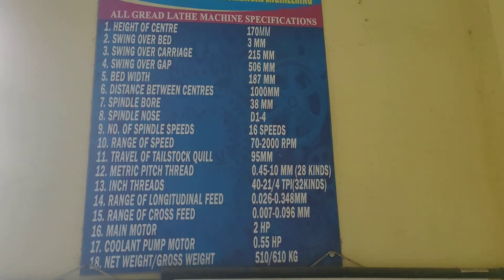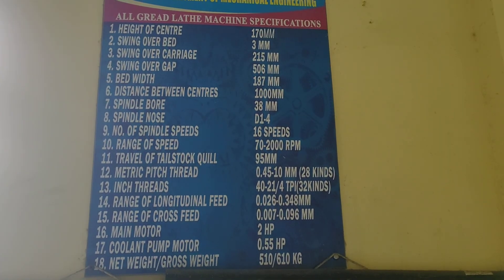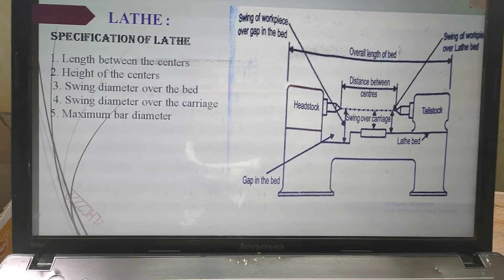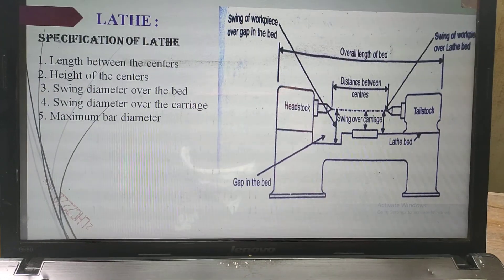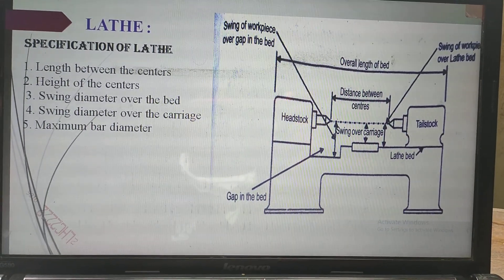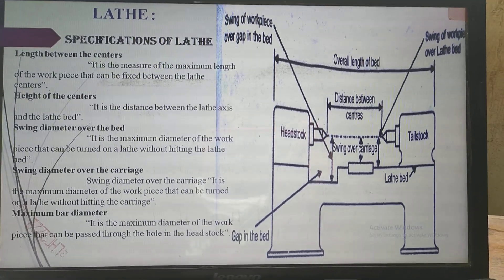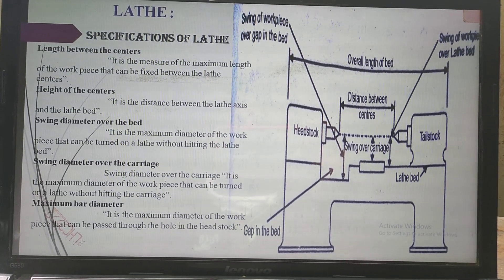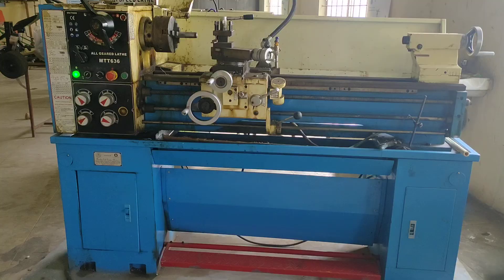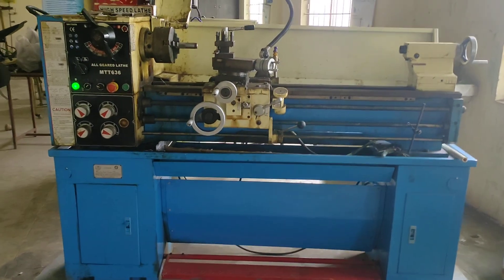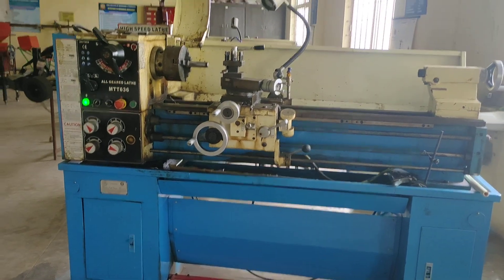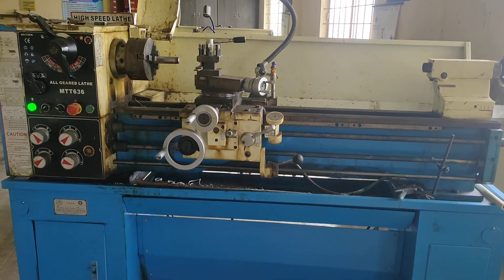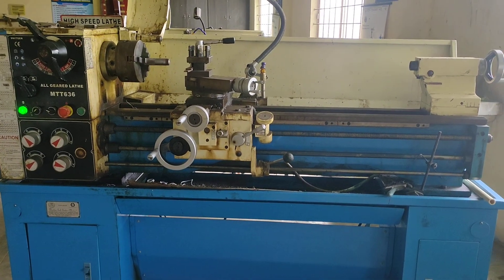So these are some of the specifications of a particular machine. The final key specifications are: length between the centers, height of the centers, swing diameter over the bed, swing diameter over the carriage, and maximum bar diameter. I think you understood. Thank you friends for watching this video. If you have any queries, please comment in the comment section. Please share and subscribe. If you have any doubts, you can mail me at polia.chintada@gmail.com. Link in description.